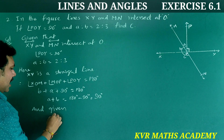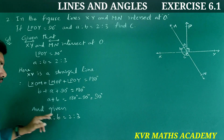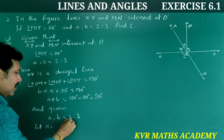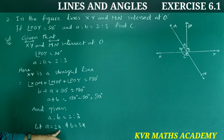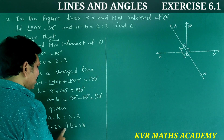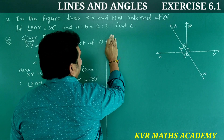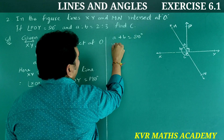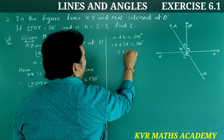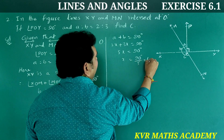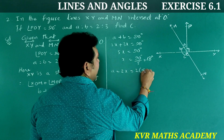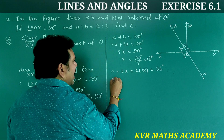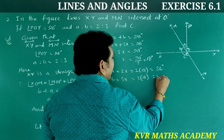Given A to B equals 2 to 3, let A equal 2X and B equal 3X. Then A plus B equals 2X plus 3X equals 90 degrees. So 5X equals 90, giving X equals 18 degrees. Therefore, A equals 2 times 18 equals 36 degrees, and B equals 3 times 18 equals 54 degrees.